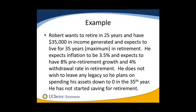Robert wants to retire in 25 years and have $35,000 in income generated from his investments. He expects to live for 35 years at the max and expects inflation to be 3.5%. He feels he can earn 8% per year while working and wants to use a 4% withdrawal rate in retirement. He does not wish to leave any legacy, so he plans on spending his assets down to zero in the 35th year. He has not started saving for retirement.